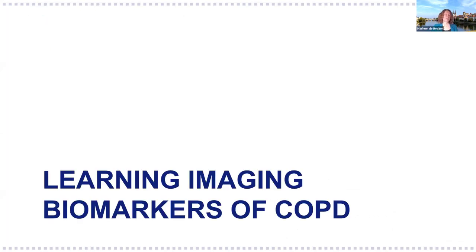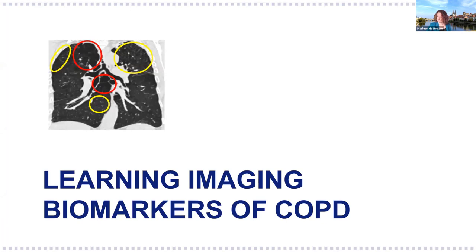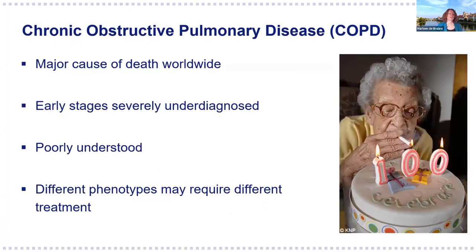An example I want to show in that direction is learning imaging biomarkers of COPD. COPD is one of the leading causes of death worldwide. Its early stages are severely underdiagnosed. There is no cure, but proper disease management can slow progression, so early diagnosis is important. The mechanisms involved are not well understood—why do some people get the disease and others don't? We know smoking is a factor, but non-smokers can also get it, while some smokers can smoke until age 100 without much issue. There appear to be different phenotypes that progress faster or slower, and we don't really know what discriminates them.